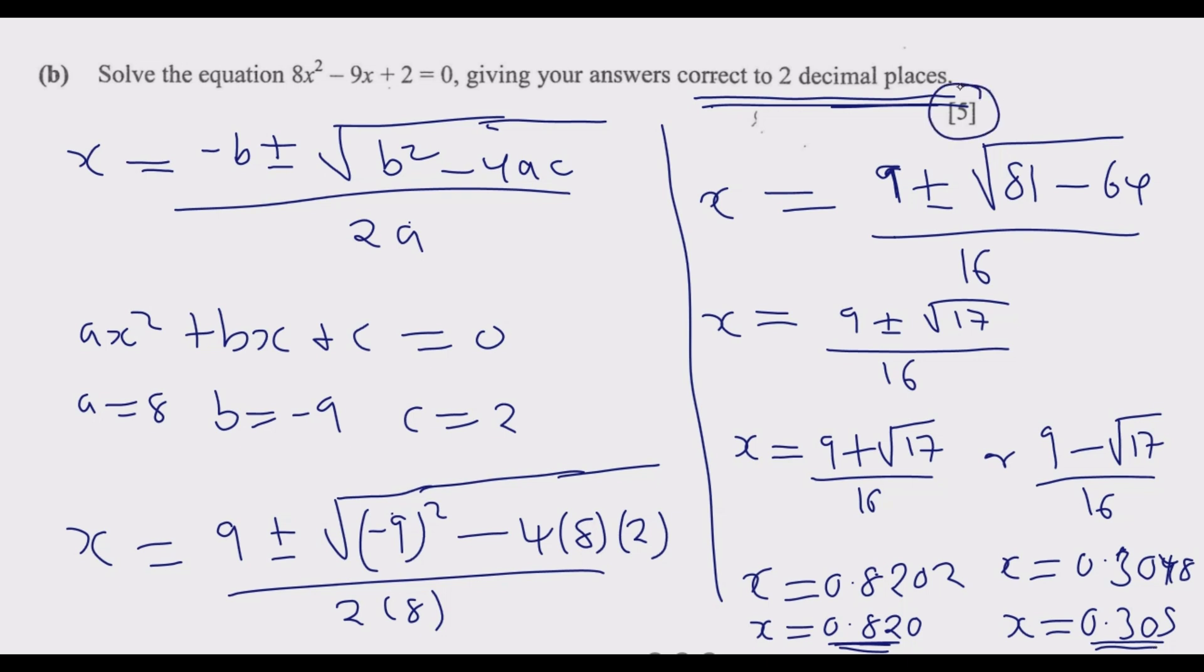Remember, there will always be a question that asks you to solve a given equation giving your answer to two decimal places. That's five giveaway marks. This question always carries five marks. Before you even go into an exam, you know this question is going to come. There is no need for leakage, mathematics is simple. Thank you for joining me in this episode. Please join me in the next episode as we look at question six.